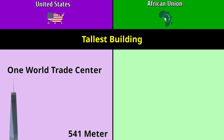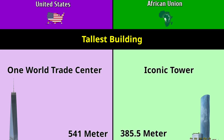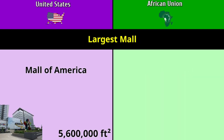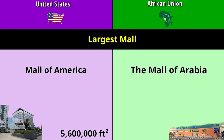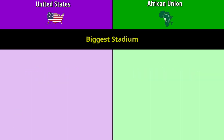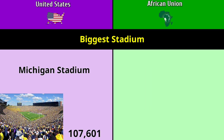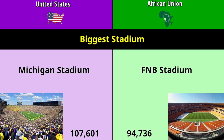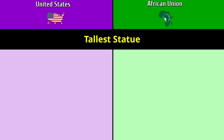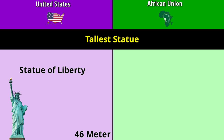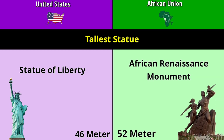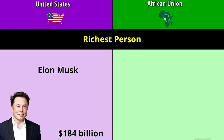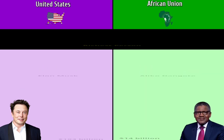Tallest building: One World Trade Center at 541 meters versus the Iconic Tower at 385.5 meters. Largest mall: Mall of America at 5.6 million square feet versus The Mall of Arabia at 2.9 million square feet. Biggest stadium: Michigan Stadium at 107,601 versus FNB Stadium at 94,736. Tallest statue: Statue of Liberty at 46 meters versus African Renaissance Monument at 52 meters. Richest person: Elon Musk at 184 billion dollars versus Aliko Dangote at 14 billion dollars.